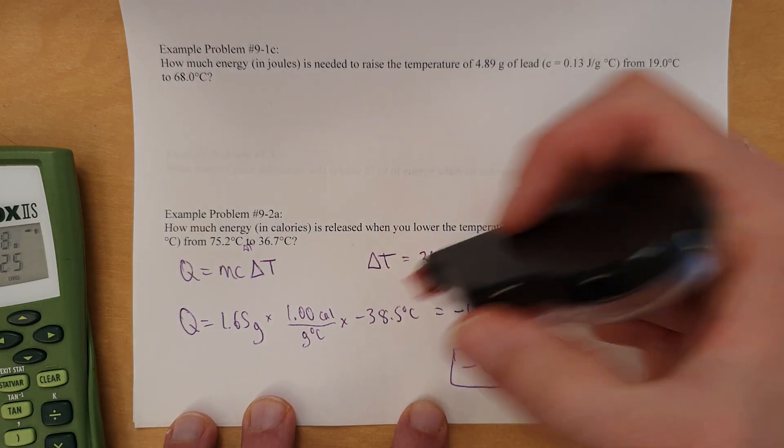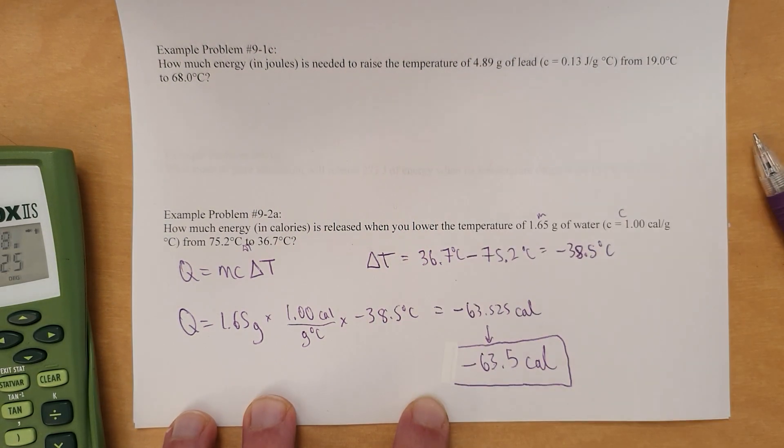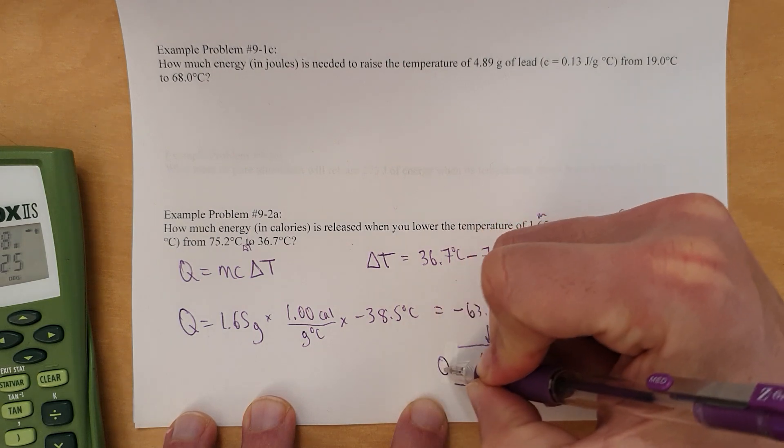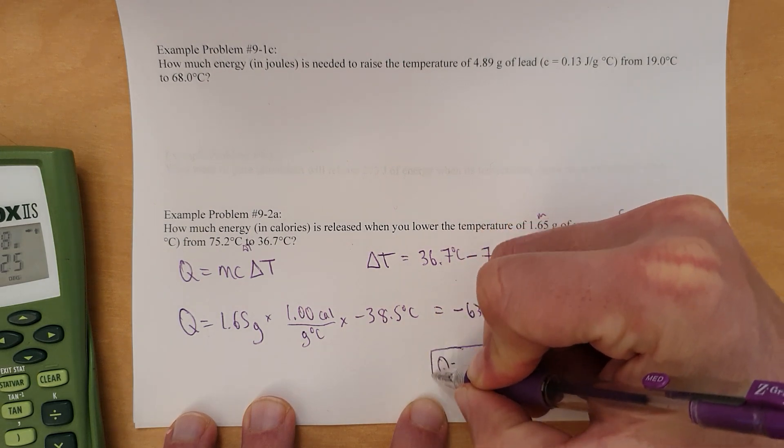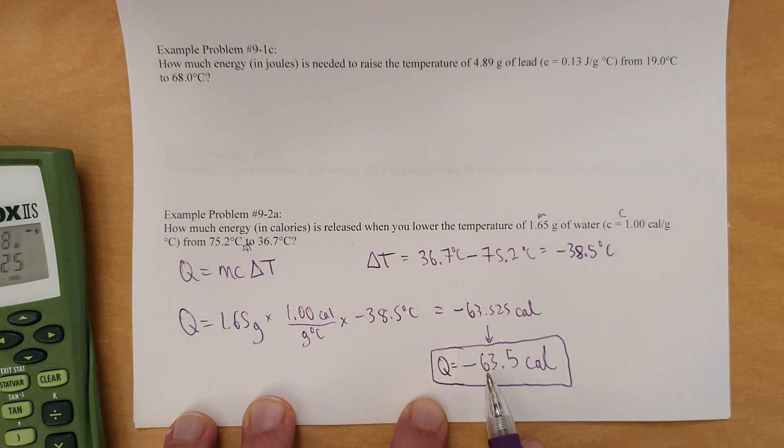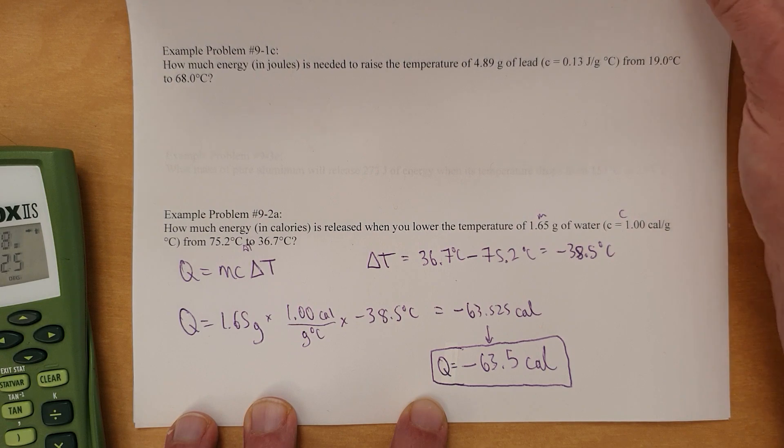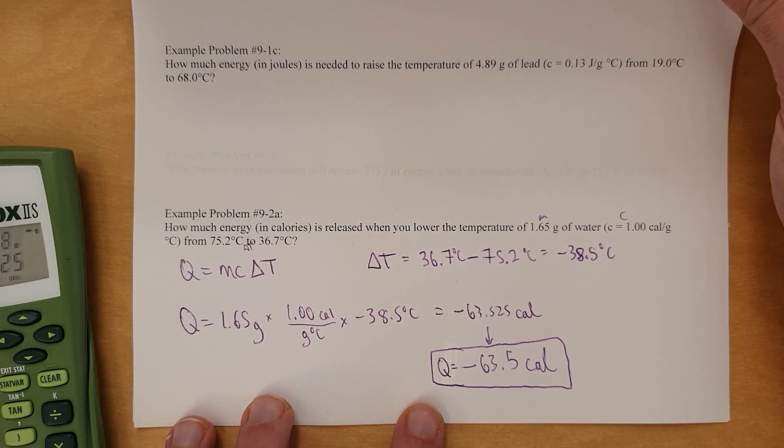You could also say 63.5 calories released would be another way to express the same idea. So, actually, let me rephrase that. Q equals, just to be clear. Or you could say 63.5 calories released without the negative sign. Either way is fine, but it gives you an idea of how to go about doing that sort of a thing. Now, let's move on.